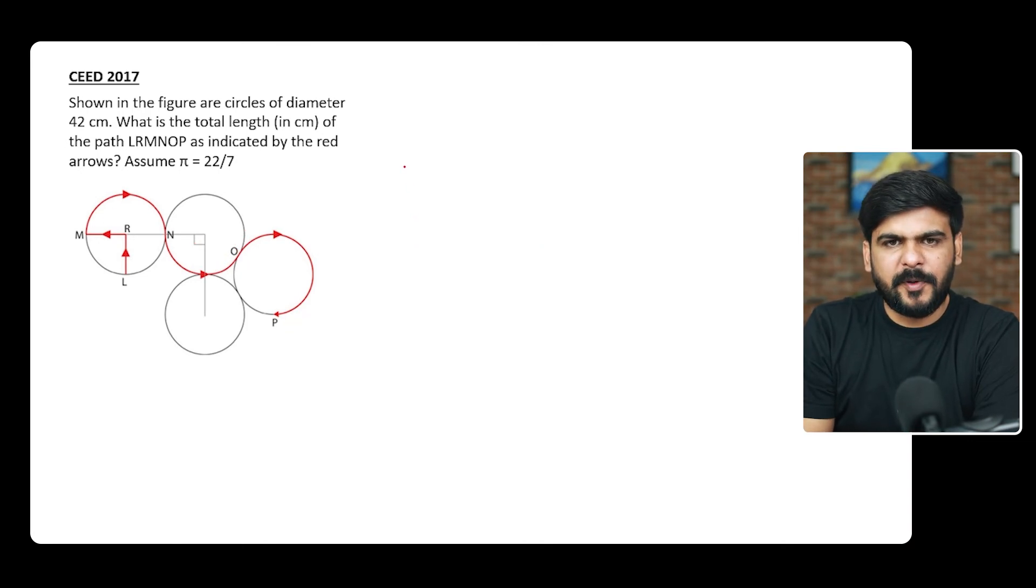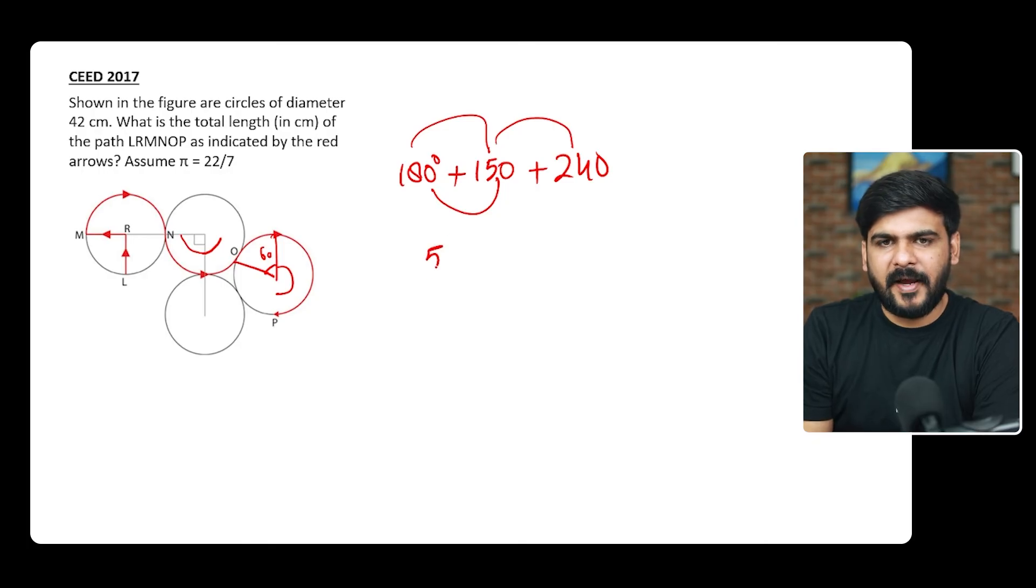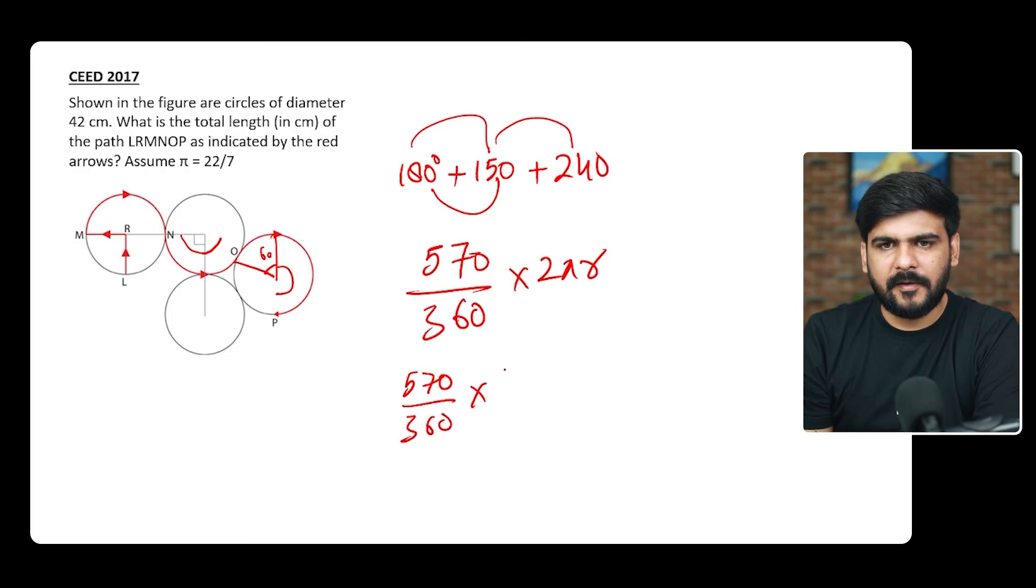See, this is a semicircle, so it would be 180 degrees from M to N. Then NO, it is 90 and 60, that is 150. Then from OP, this was 60 and this is 180, so this is 240. If we add this, we will get 180 and 150, 330 and 240, that is 570 total. Divide by 360, because 360 is the full circle. So now let us put the values: 570/360 × π, given is 22/7, and radius will be half of 42, that is 21.